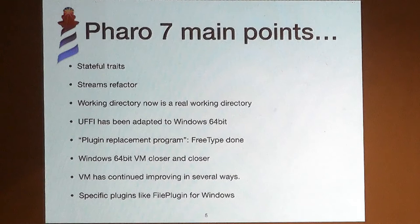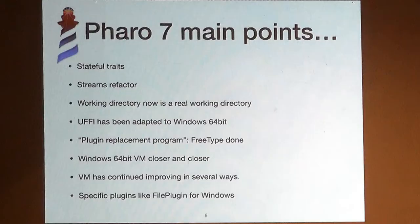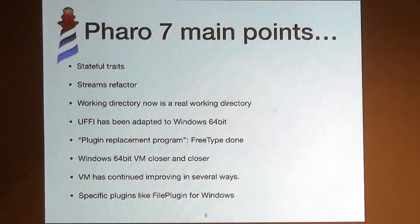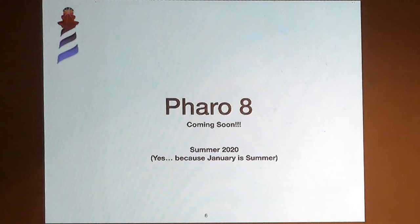We also have a new browser called Calypso that we are using to build a lot of things on top of. In the core libraries we added a new version of traits — one that is stateful — and a lot of refactors in the stream library. We are finally using the stream library in the core image for everything, so we are deprecating a lot of old classes. We have been working a lot on UFFI, which is a way of having different backends and expressing how to interact with C libraries. There are also general improvements in the plugins and FFI plugins.